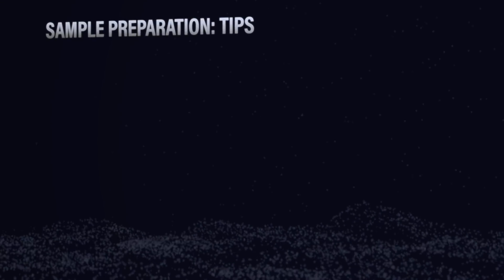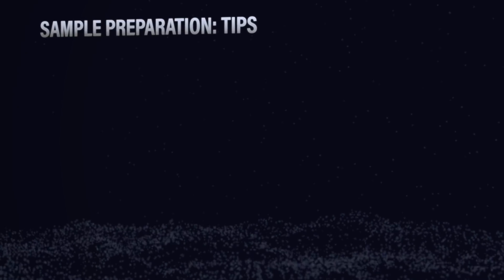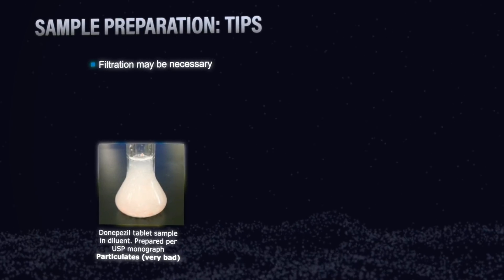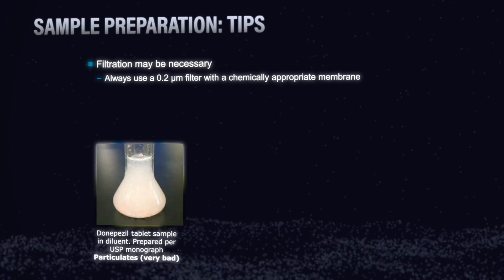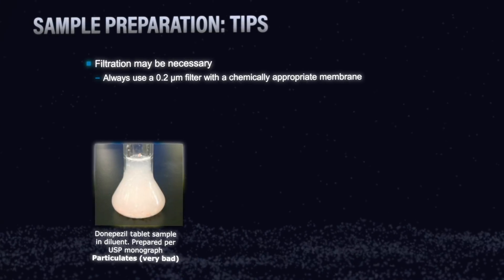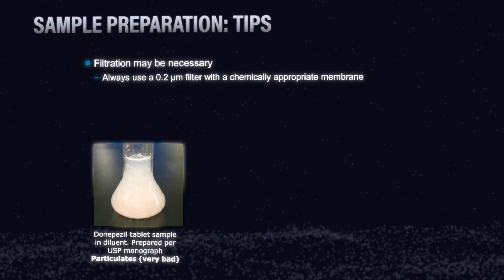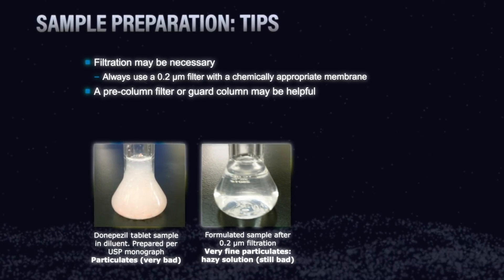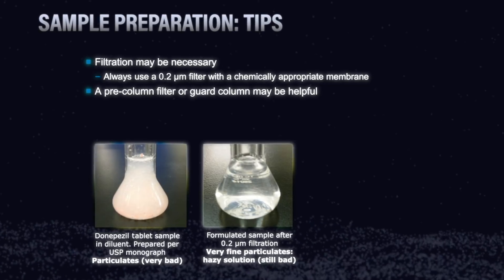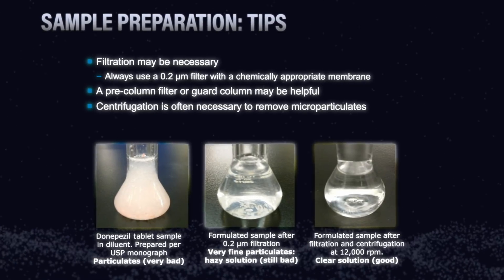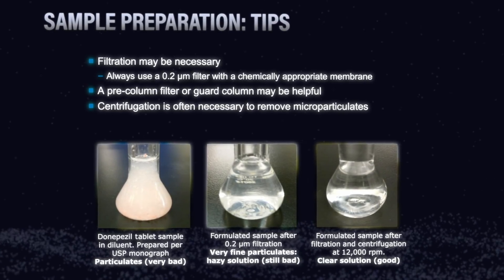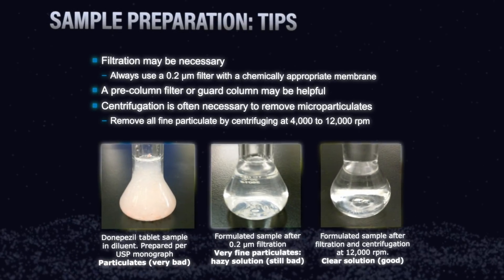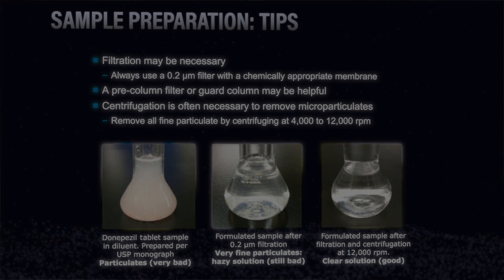To clean up your sample, there are a couple of different steps that you can take depending upon how dirty it really is. A filter might be helpful. You can use a 0.2 micron filter with a chemically appropriate membrane to make sure that the solvents are compatible. You can consider using a pre-column filter or a guard column to remove some of those particulates. And if it's really dirty, you can think about centrifugation. You can do that around 4,000 to 12,000 RPM for about 15 to 30 minutes. And that can really help clean up your sample.